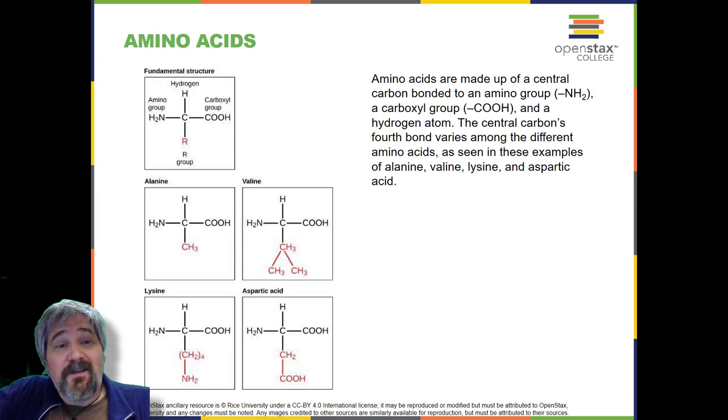Amino acids are the monomers that make up proteins. Each amino acid has the same fundamental structure, which consists of a central carbon atom bonded to an amino group (NH2), a carboxyl group (COOH), and a hydrogen atom. Every amino acid also has another variable atom or group of atoms bonded to the central carbon, also known as the R group. The R group is the only difference in structure between the 20 amino acids, otherwise the amino acids are identical.